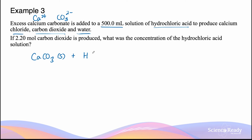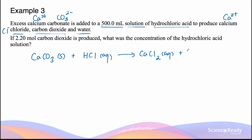The reaction produces calcium chloride. Calcium is Ca²⁺ and chloride is Cl⁻, so the empirical formula for calcium chloride is CaCl₂ — you need two chlorines for every calcium to match the charges. This is in aqueous form. The other products are carbon dioxide, CO₂, in gas form, and water, which is liquid.